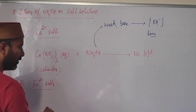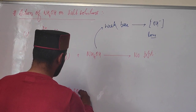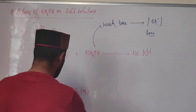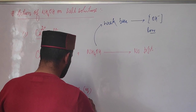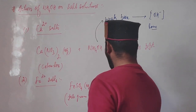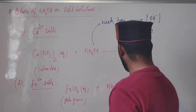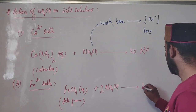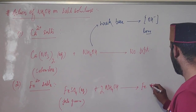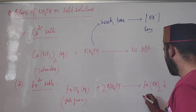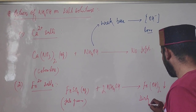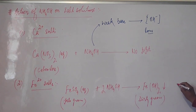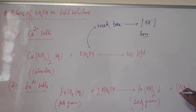Take ferrous sulfate — its aqueous solution is pale green. When we add ammonium hydroxide in small quantity, the ferrous ions get precipitated as ferrous hydroxide Fe(OH)2, giving a dirty green precipitate. Ammonium sulfate remains in solution.